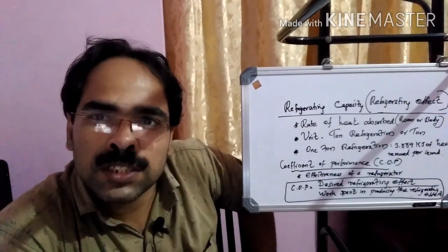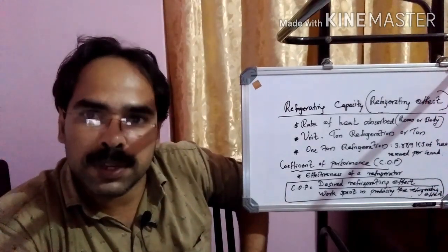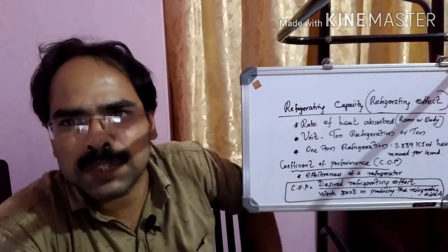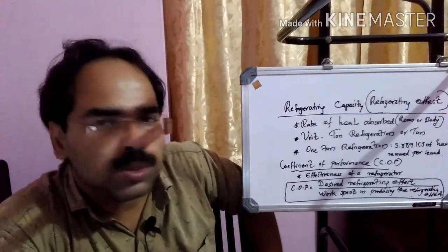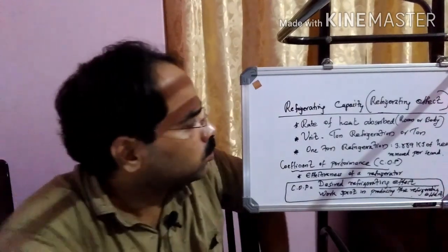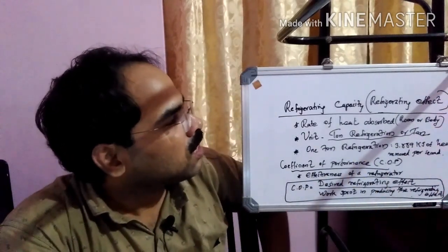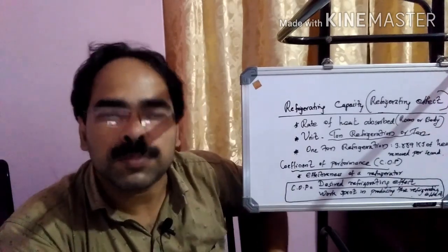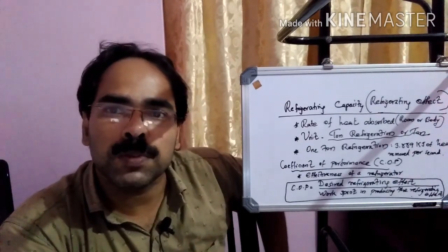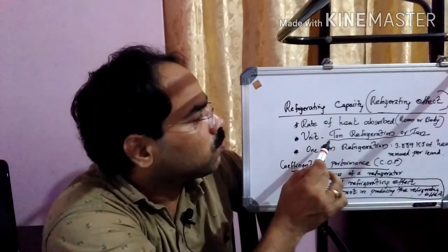If we are considering a fridge, then the heat extracted from the bodies which are present inside that cabin — maybe food products — what level of heat we are extracting or absorbing, that is we can call it as refrigerating capacity. The unit commonly we are using is ton refrigeration. One ton refrigeration means the level of heat we are absorbing from that room. Similarly, if we are considering the fridge, the level of heat we are absorbing from those food products — in order to represent that, we are using the unit ton refrigeration.